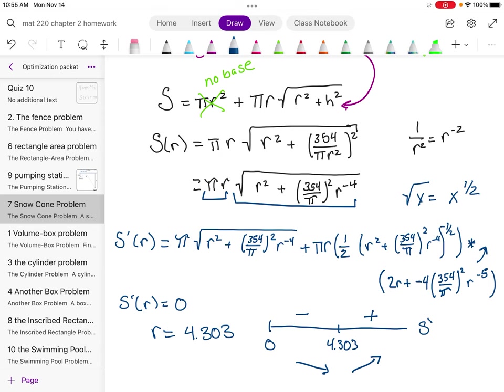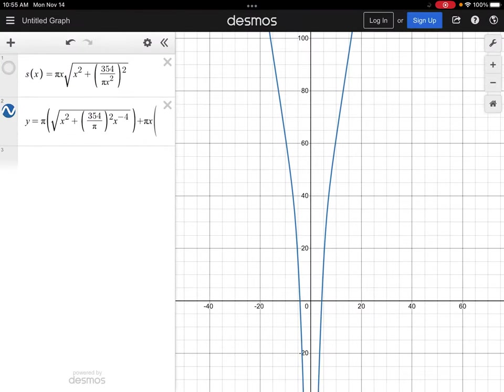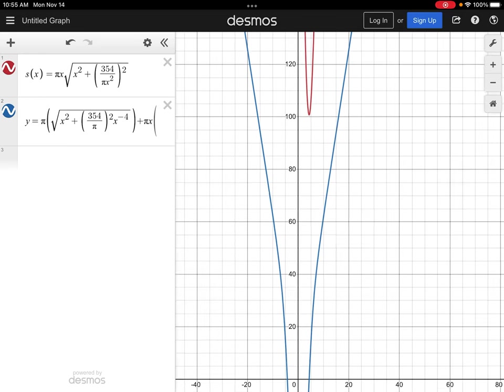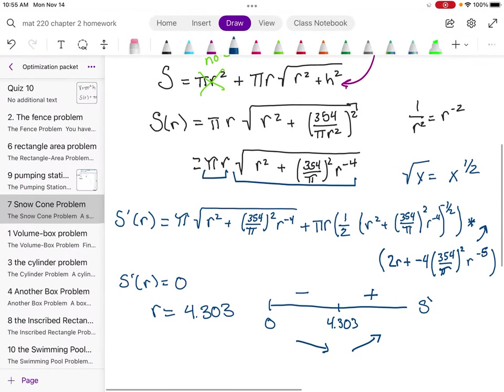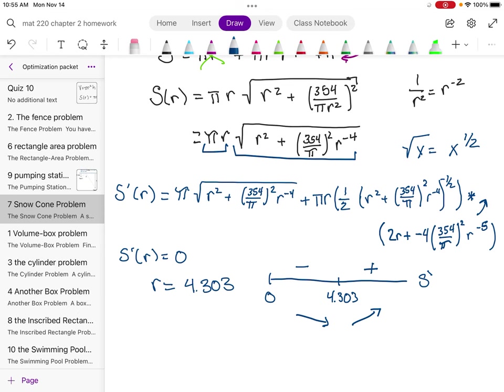And I could double check that by graphing the original function. Don't ever be afraid to do that, especially with these optimization problems. And if I notice, my original function is way up here. And I can see, yep, it hits a low point right there at 4.303. And so I know, congratulations, I found my minimum value.